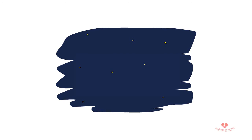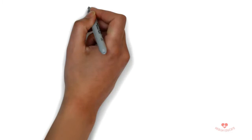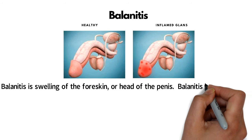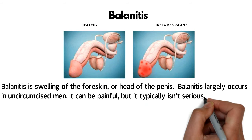Welcome to AutoDoCare — don't forget to click on the subscribe button. Today we are going to be talking about balanitis. Balanitis is the swelling of the foreskin or the head of the penis. It likely occurs in uncircumcised men. It can be painful but typically isn't serious, and it can often be relieved by using topical medication.